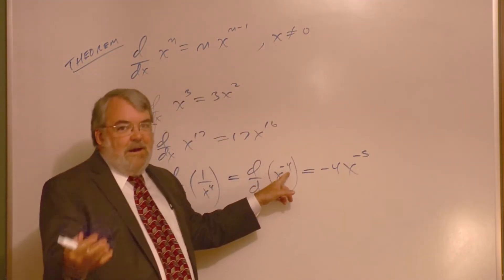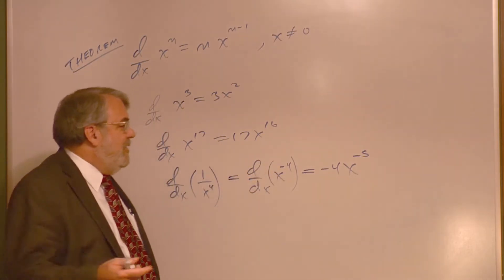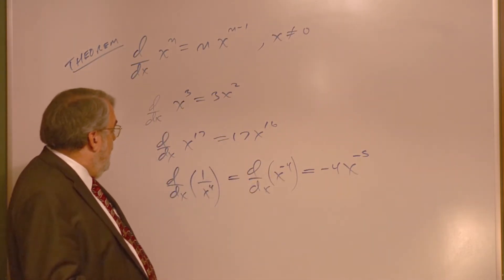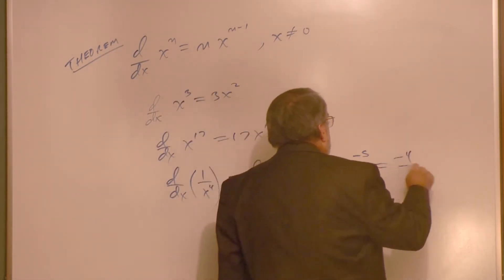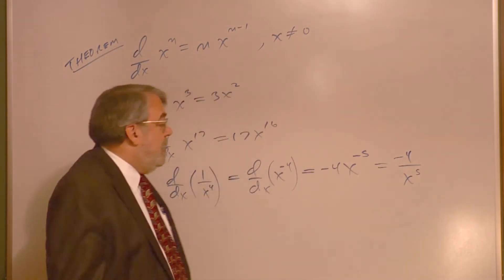It's negative 4x to the minus 5. So careful on that—minus 4 minus 1 is not negative 3, it's negative 5. And since we started with a fraction, maybe we should end with a fraction. This would be minus 4 over x to the fifth power.